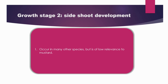Coming to the next stage, that is the side shoots development stage. In any crop there will be shoot development. Here you can see that the side shoot development is happening in the mustard. It occurs in many other species also, but it is of low relevance to the mustard.